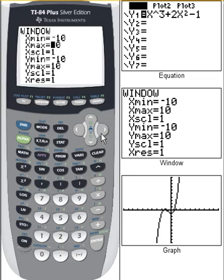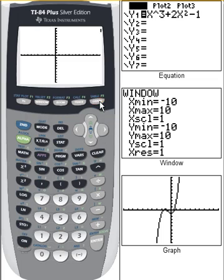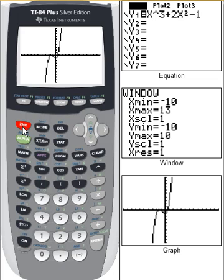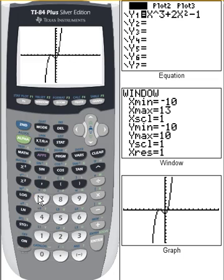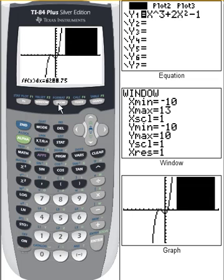So we need this to go to at least 12. So if we change that to 13, bring up my graph again. Let's try this one more time. Second, calculate, integral from 3 to 12. And we get 6,288.75. And you see it even shades in the area for us.